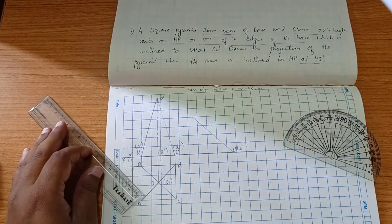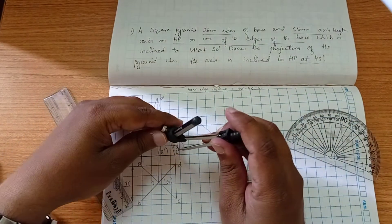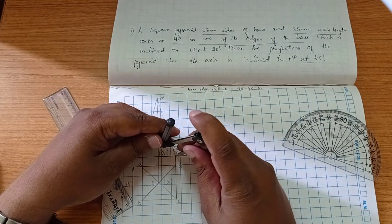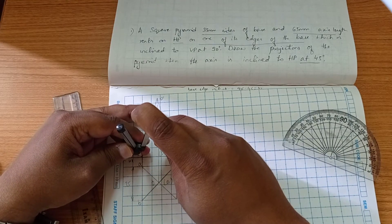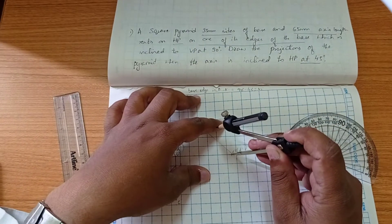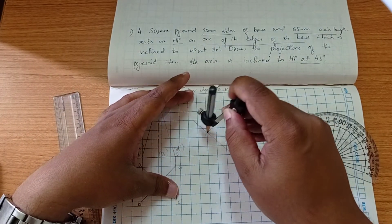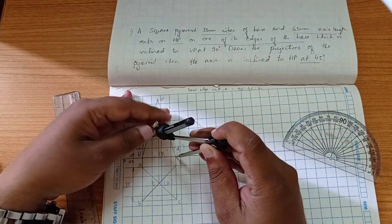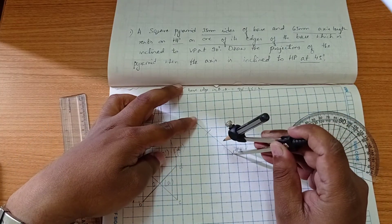Now using the compass, you have to measure this length from C dash to B dash. Draw the first arc, second arc from C dash to O dash.